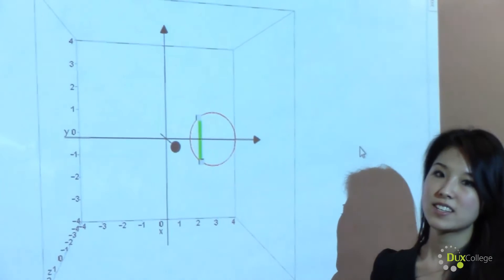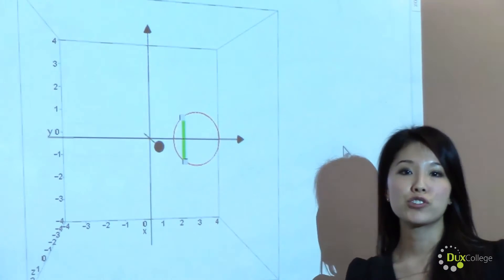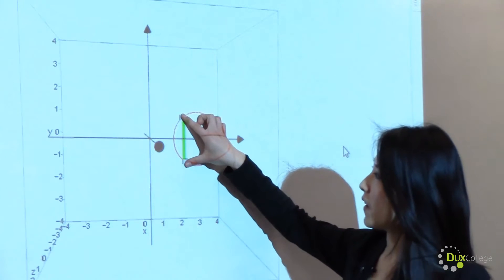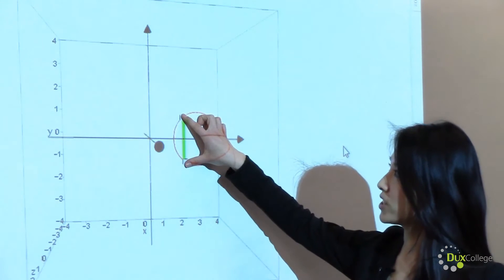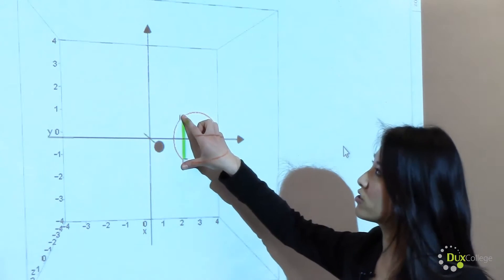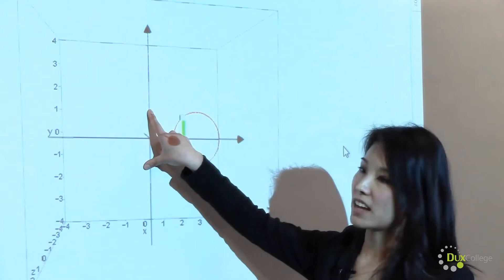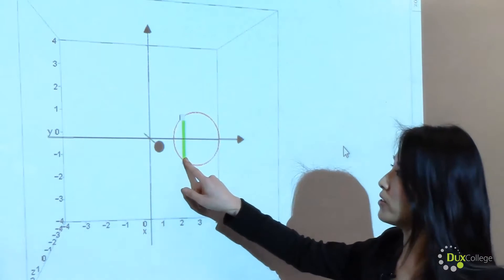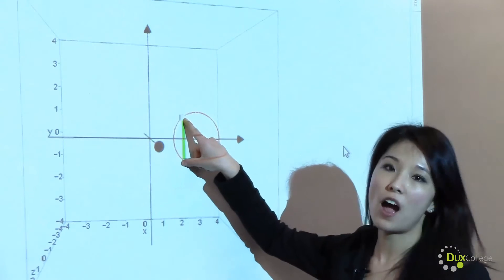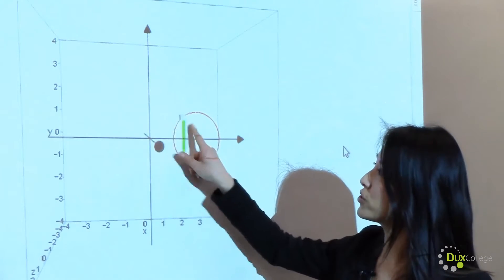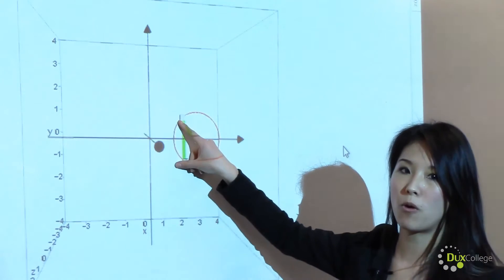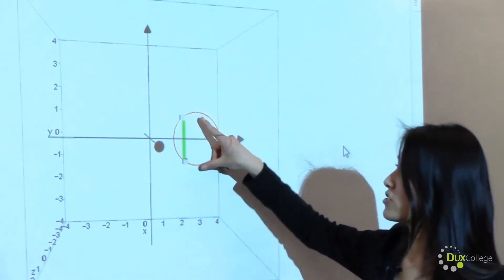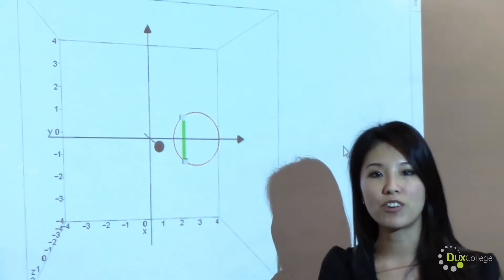Now let's look at the same volume using the cylindrical shell method. Here we are taking one slice of the area of the cross-section and rotating this slice about the y-axis. Unlike the slicing method, in the cylindrical shell method this slice is parallel to the axis of rotation, so that when we rotate it we will form a very thin cylinder.